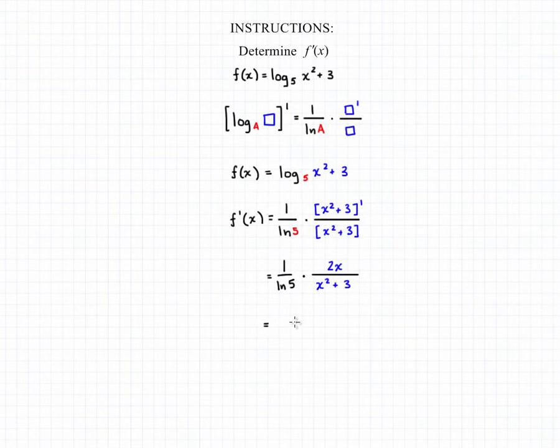We can complete that multiplication and get our final answer, which will be 2x over the natural log of 5 times the quantity x squared plus 3.